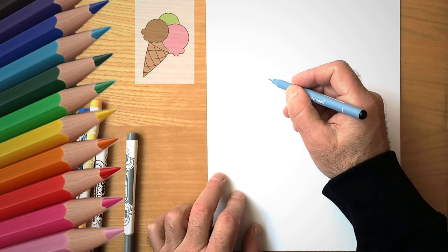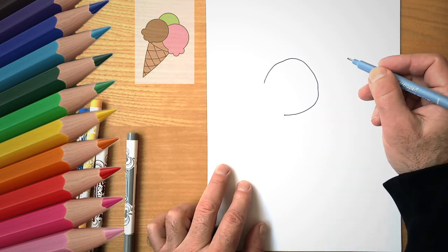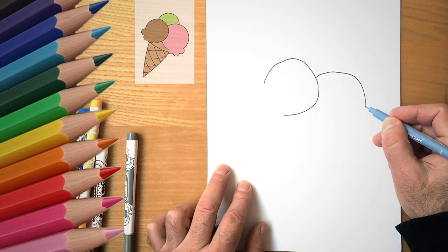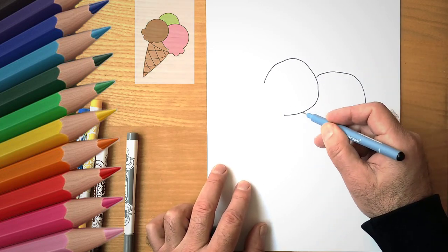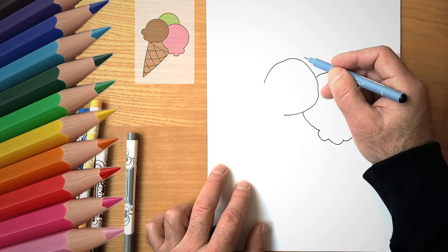How to draw ice cream. We draw three ice cream balls. YouTube Kids, all kids love ice cream. Let's see how you can draw ice cream today. We are drawing three balls of ice cream. First, let's draw a circle.